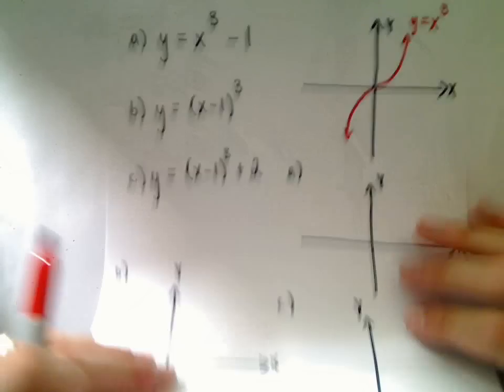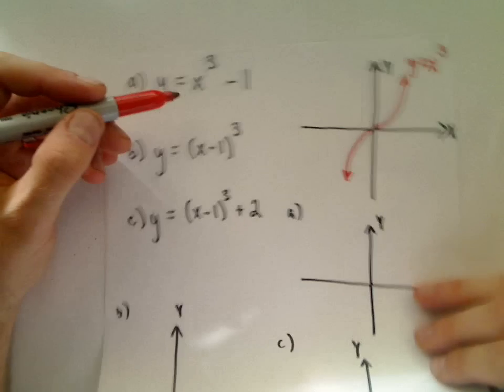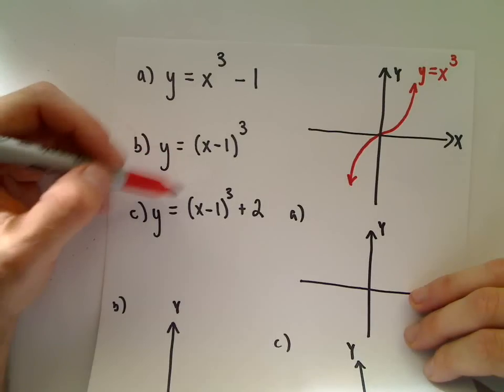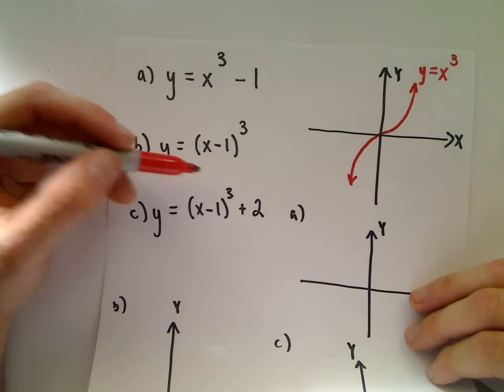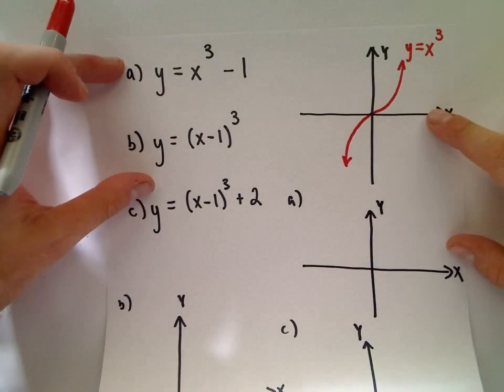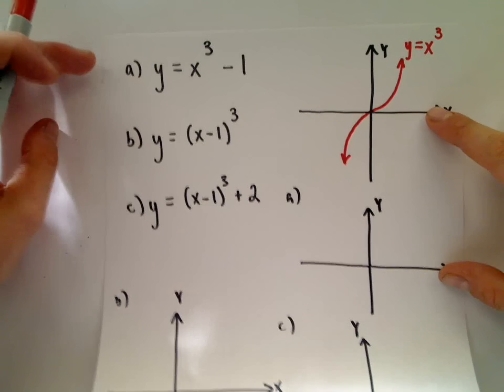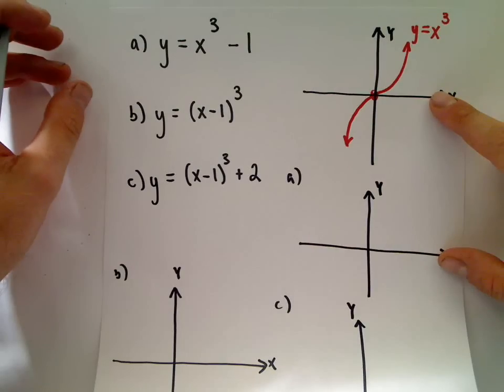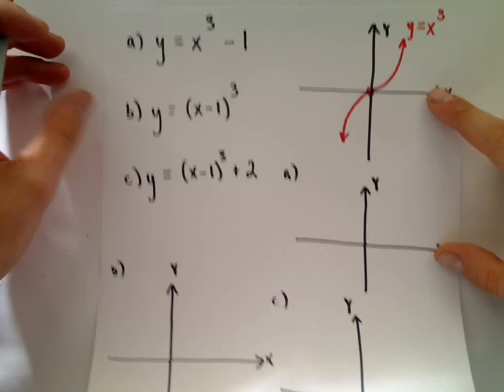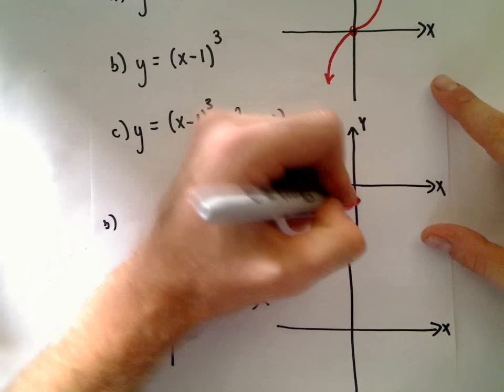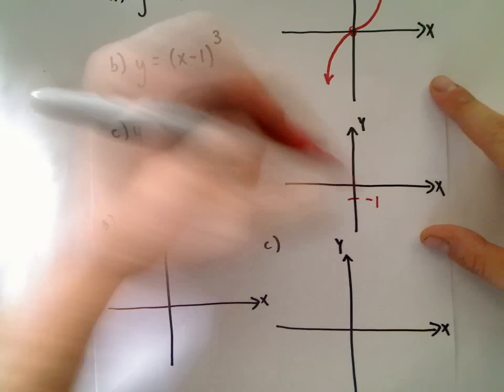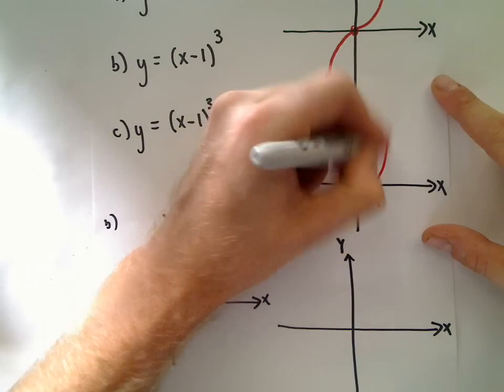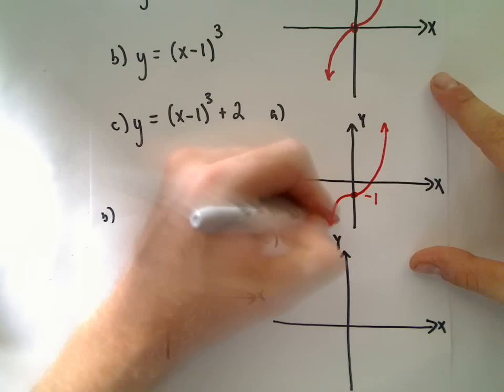Let me do a couple more examples. We've got a) x³ - 1, b) (x-1)³, and c) (x-1)³ + 2. Our starting point is y = x³, which goes through the origin. For part a, x³ - 1 moves the graph down one unit, so it goes through (0, -1) instead of (0, 0).